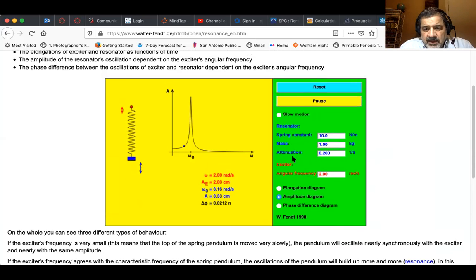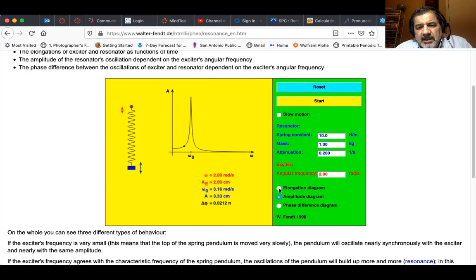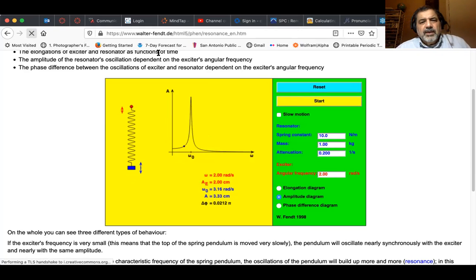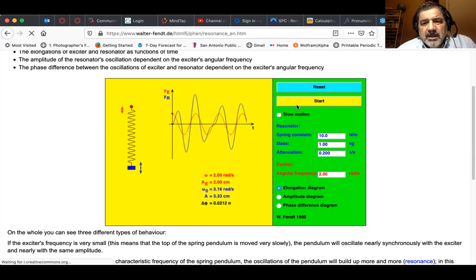You can see there, there's an exciter set for two radians per second that's causing the little red ball to go up and down. And it's not oscillating very well. Let's reset it. And let's look at the elongation diagram. Let's start again. Actually, let me reset the whole thing. So you'll see it start from zero.